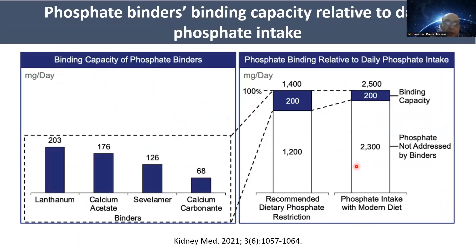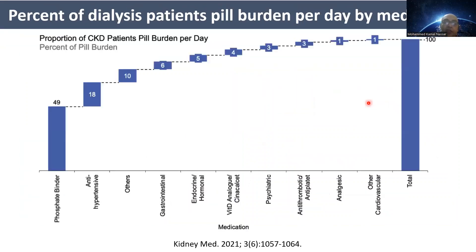Despite the variety of binders, there is a limited binding capacity. The binding capacity relative to daily phosphate intake accounts for only about 200 mg per day. With a restricted diet, phosphate intake is around 1,400 mg, leaving approximately 1,200 mg to be removed by other means — a gap that worsens with higher phosphate intake from modern diets. Phosphate binders alone are not effective for control, and in addition, they contribute the largest pill burden among all medications used by CKD patients.